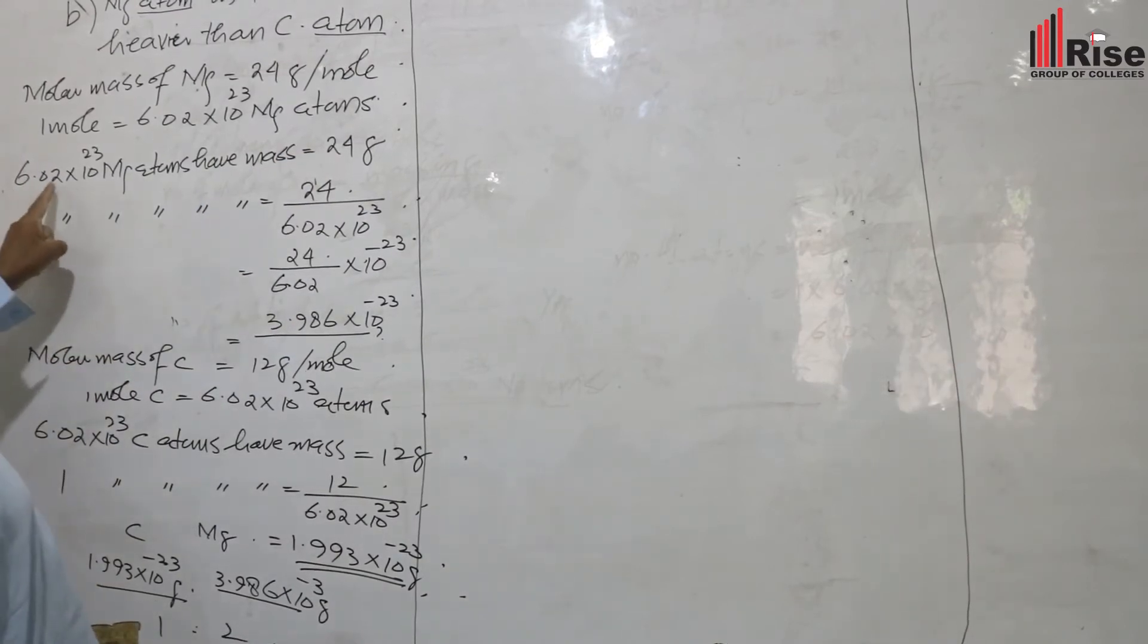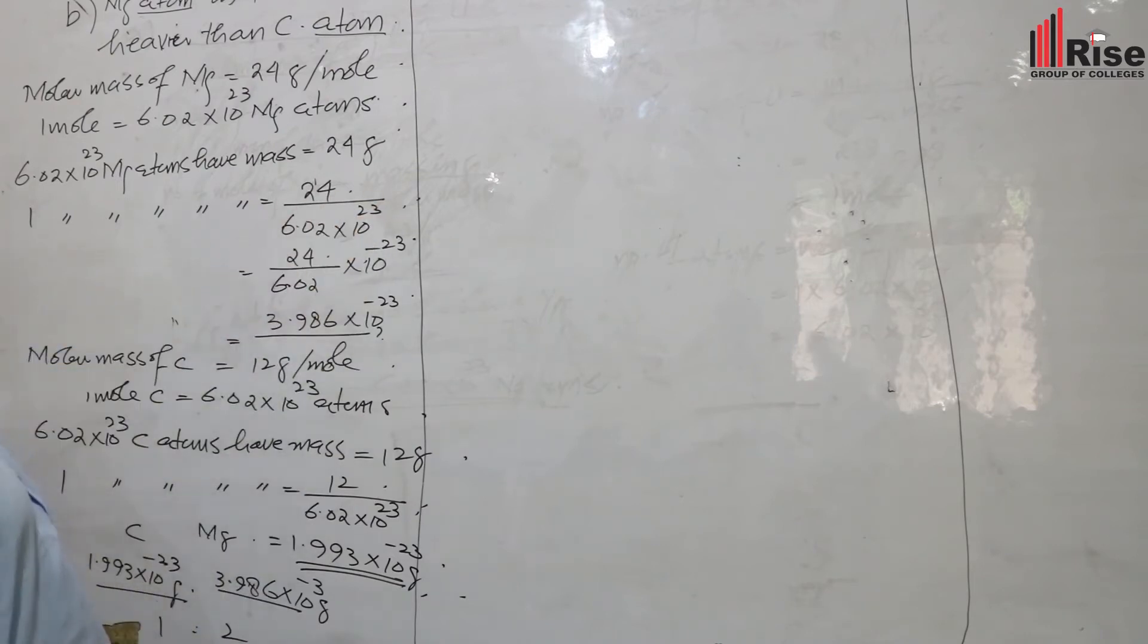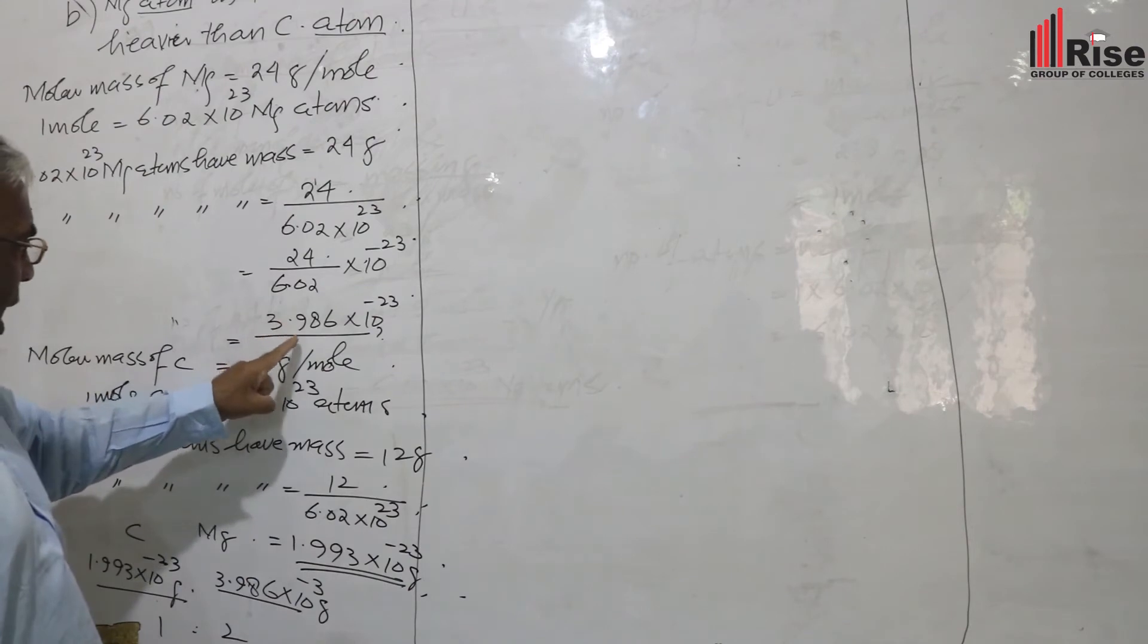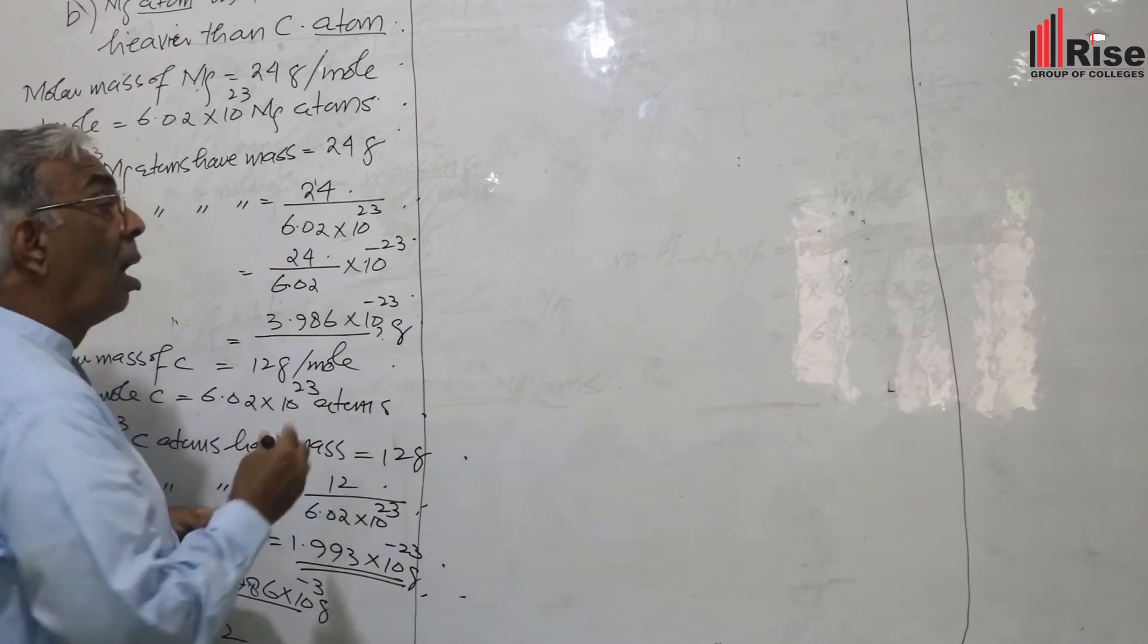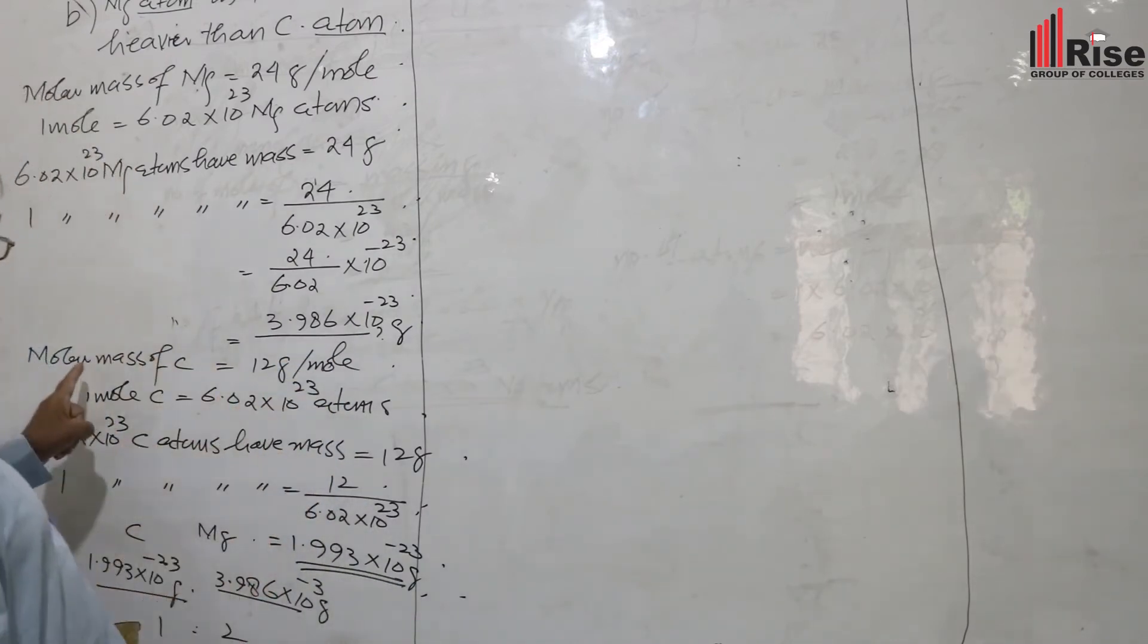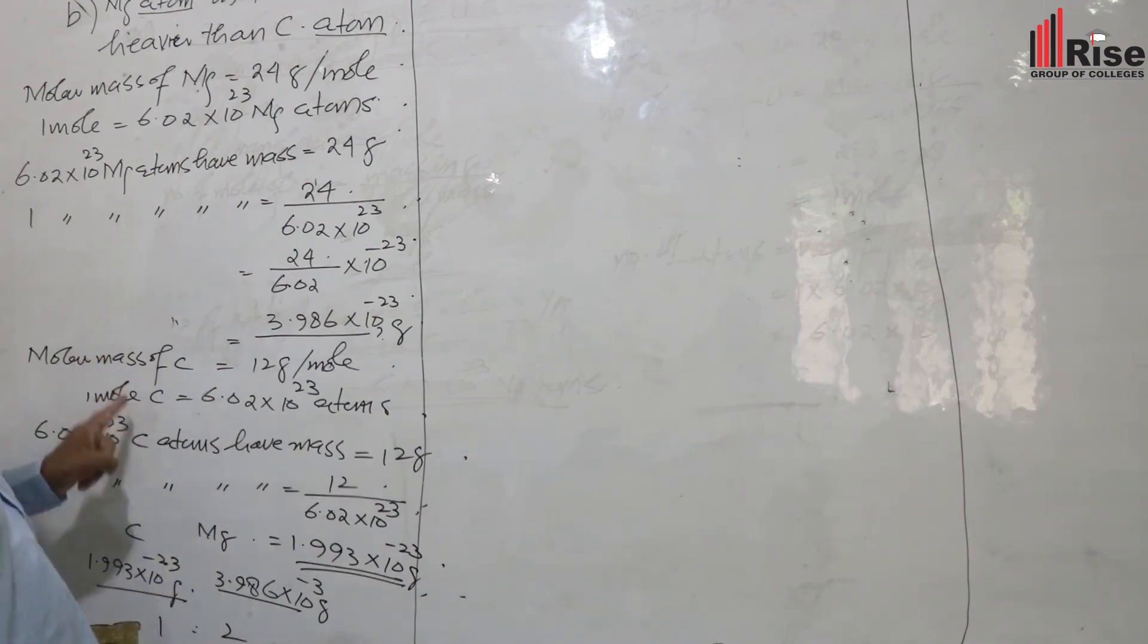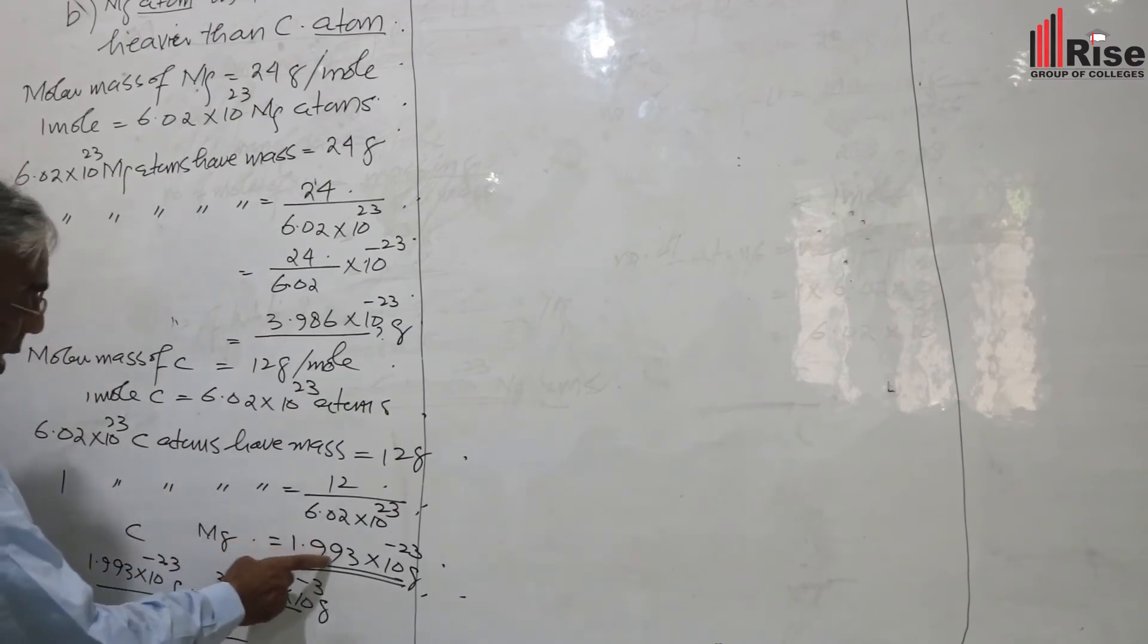Mass of one magnesium atom equals atomic mass divided by Avogadro's number: 24 grams divided by 6.02 times 10 raised to power 23 equals 3.986 times 10 raised to power negative 23 grams. Carbon atom mass equals 1.993 times 10 raised to power negative 23 grams.